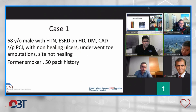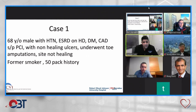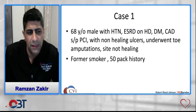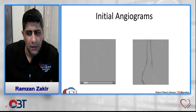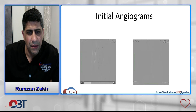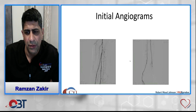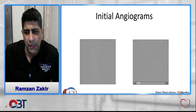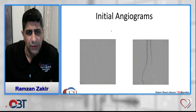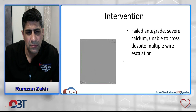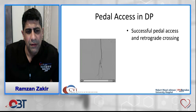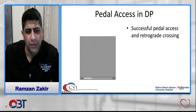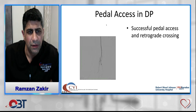First case: 68-year-old male with hypertension, end-stage renal disease on hemodialysis, all traditional risk factors, a non-healing ulcer at the amputation and toe site, heavy smoker. Angiogram shows a very calcified long anterior tibial artery occlusion with a trickle of flow reconstituting above the ankle. Despite multiple wires, unable to cross from an antegrade approach. We obtained pedal access and the wire coming up retrograde was able to cross the occlusion fairly simply.